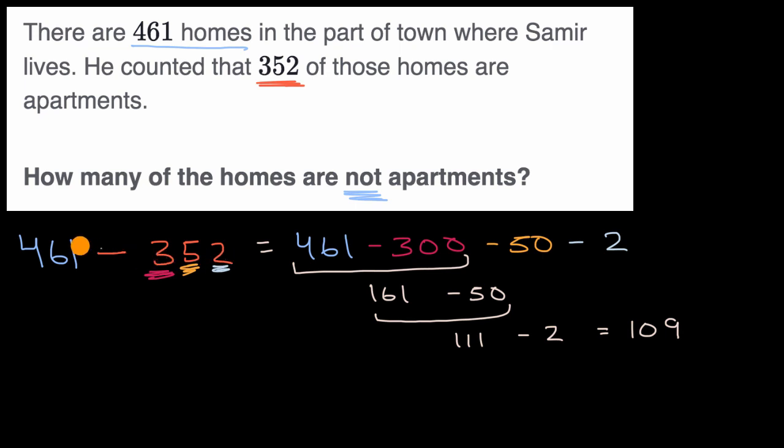So if you subtract 2 from 461, if you subtract one, you get to 460, you subtract two, you get to 459. 459 minus, you subtract 2 from this, you get to 350.